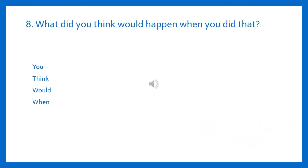Let us now identify the pronoun in this sentence: 'What did you think would happen when you did that?' We have four options: you, think, would, when. The correct answer is 'you.' You is the second person personal pronoun, used as both singular and plural. It is the subject of this sentence.